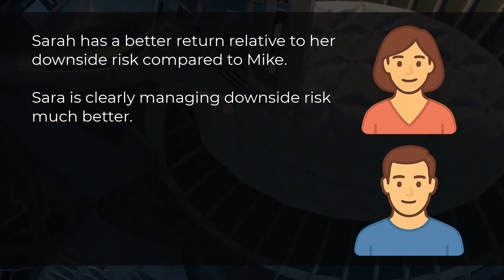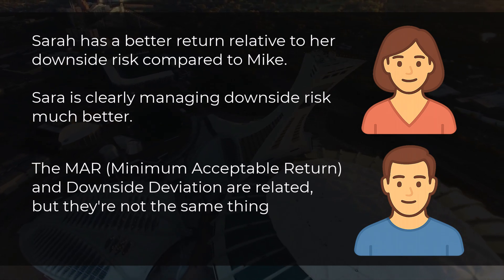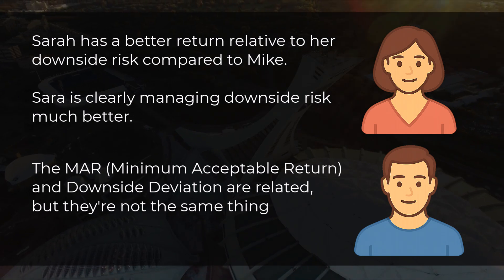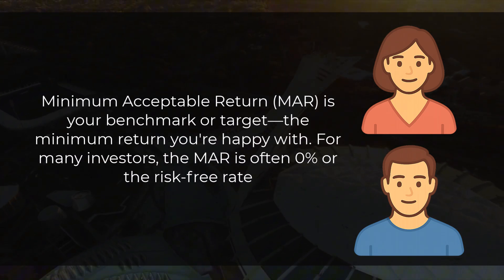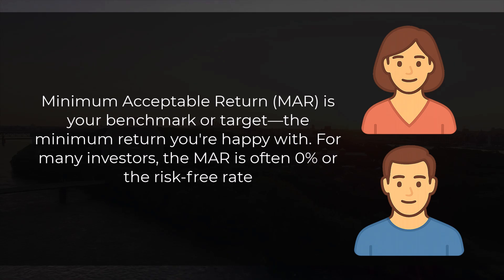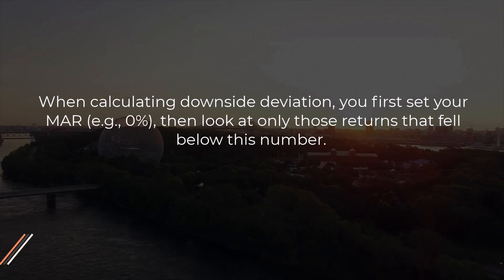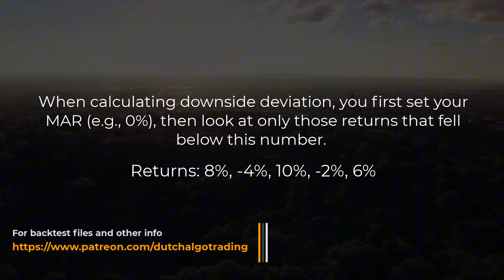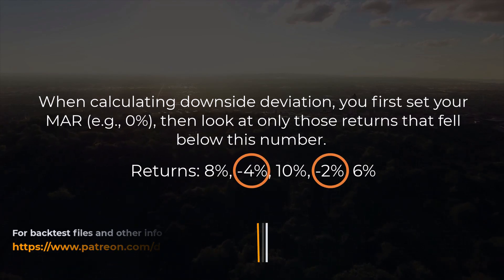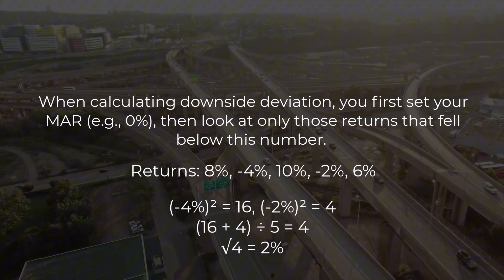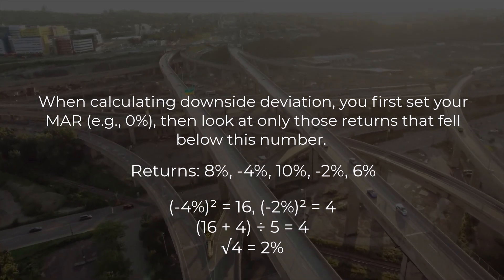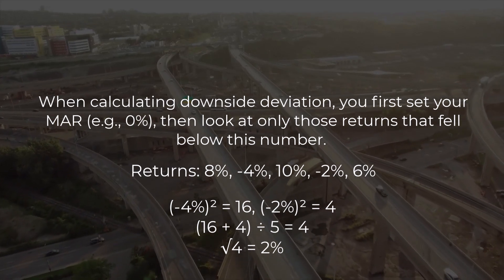Remember that the MAR — the minimum acceptable return — and downside deviation are related, but they're not the same thing. The minimum acceptable return is your benchmark or target, the minimum return you're happy with, often set at 0%. When calculating downside deviation, you first set your MAR, then look at only those returns that fall below this number, and calculate how much these negative returns fluctuate below the MAR. Downside deviation is literally the measure of how much returns swing below this MAR.